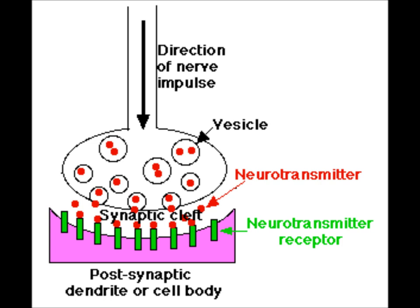After the neurotransmitter molecules attach to the receptor sites, they detach and are reabsorbed by the presynaptic neuron, so they can be recycled and used again — a process called reuptake.